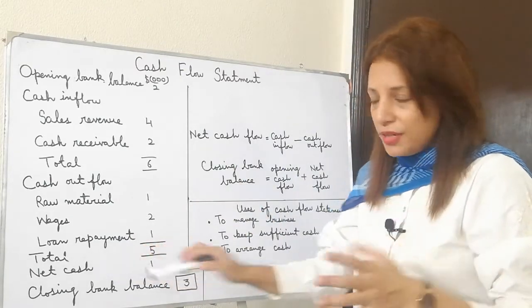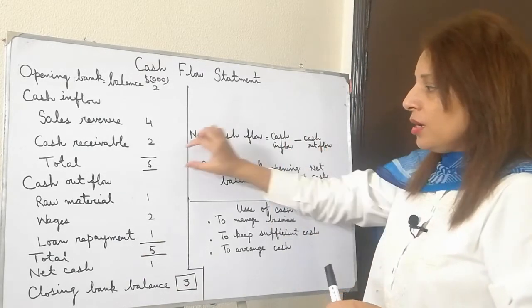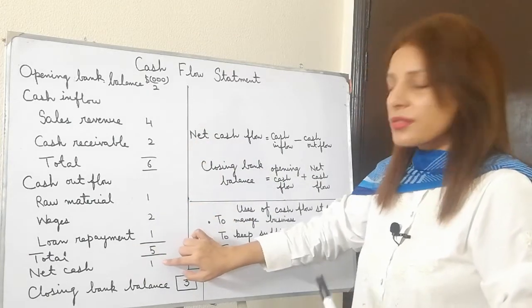And this gives you the total of five. Now for net cash flow. Net cash flow is basically the difference between cash inflow and outflow. I have total of cash inflow, I have total of cash outflow. I will take the difference, that is one.